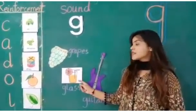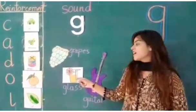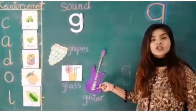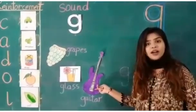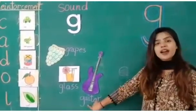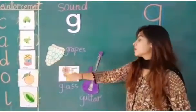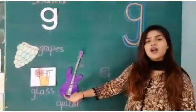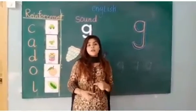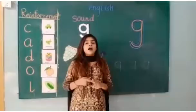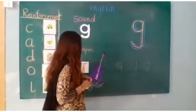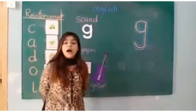What is this? This is a guitar. We have lots of vocabularies from the sound G, like there are animals — gorilla, goat — and also gate, glass, guitar, and grapes. This is a fruit, and guava as well.